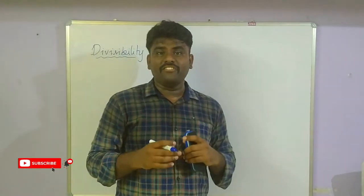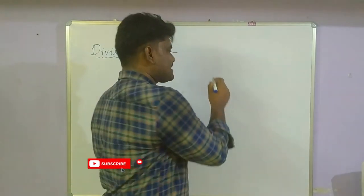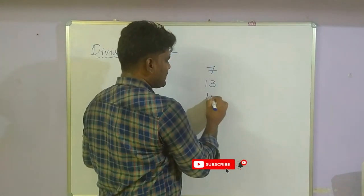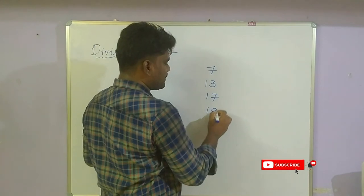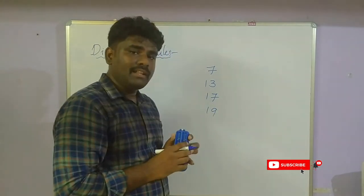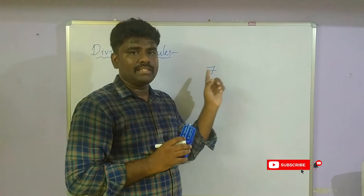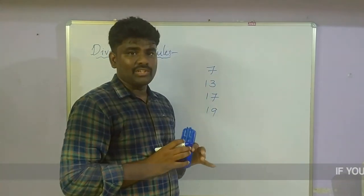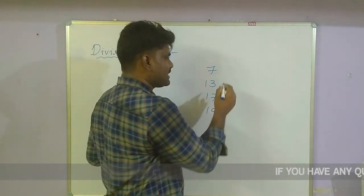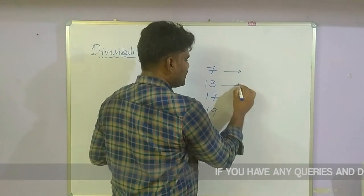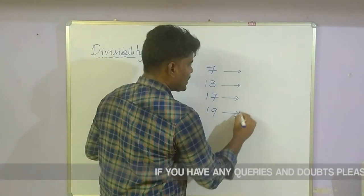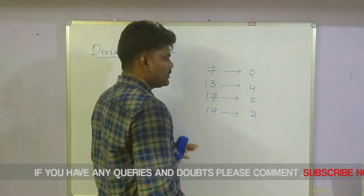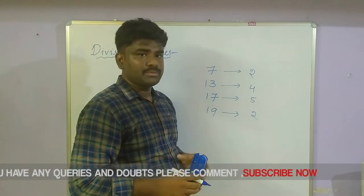Most people find it difficult to remember the divisibility rules for 7, 13, 17, and 19. Just remember the pattern 2, 4, 5, 2 with signs minus, plus, minus, plus. This means: for 7, the units place is multiplied by 2 and subtracted from the remaining digits.